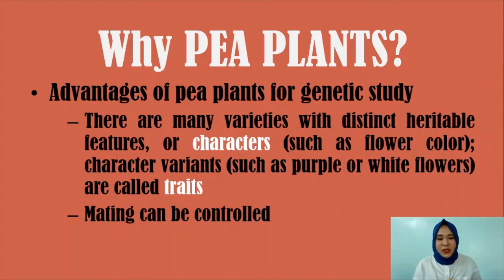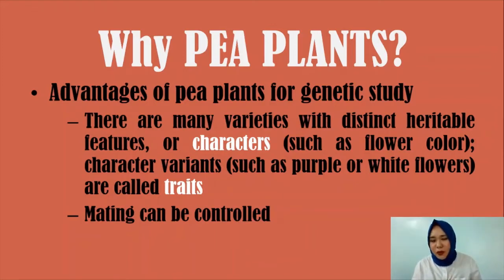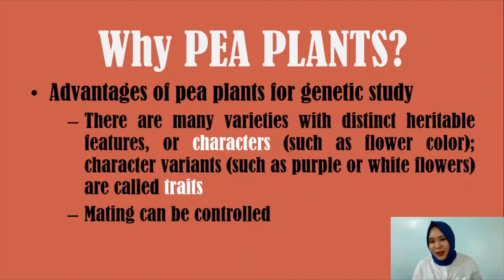We have two important terms: characters and traits. When you say characters, these are distinct heritable features — such as flower color, seed shape, or seed color; these are more general. But when you talk about varieties of a character — called character variants — we call them traits. Examples of traits are purple flower, white flower, yellow flower, green flower. Compared to a character, traits are more specific. For humans, for example, hair color is a character, but blonde, black, brunette, or redhead are traits.